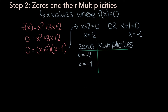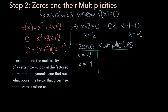Now let's add another component: finding the multiplicity of each zero. To find the multiplicity of a certain zero, look at the factored form of the polynomial and find what power the factor that gives rise to the zero is raised to. For the zero x equals minus 2, the factor is x plus 2, and though not written, there is an implied power of 1 — so the multiplicity is 1. The same process applies to x equals minus 1: the factor x plus 1 is also raised to the power of 1, so its multiplicity is 1 as well.